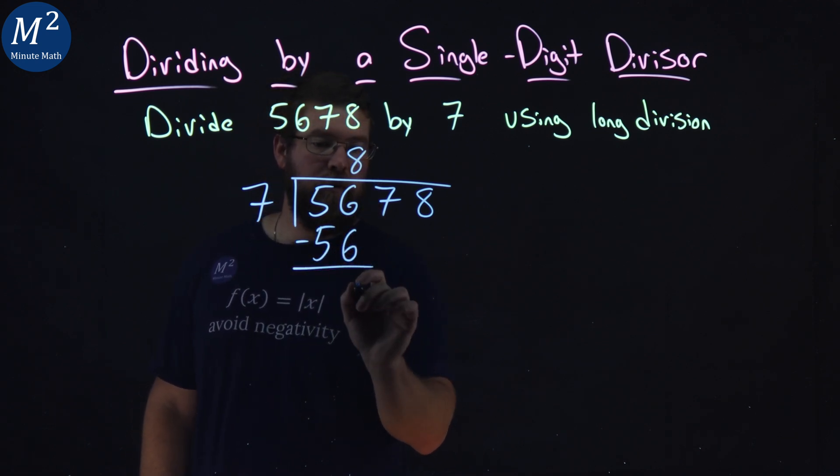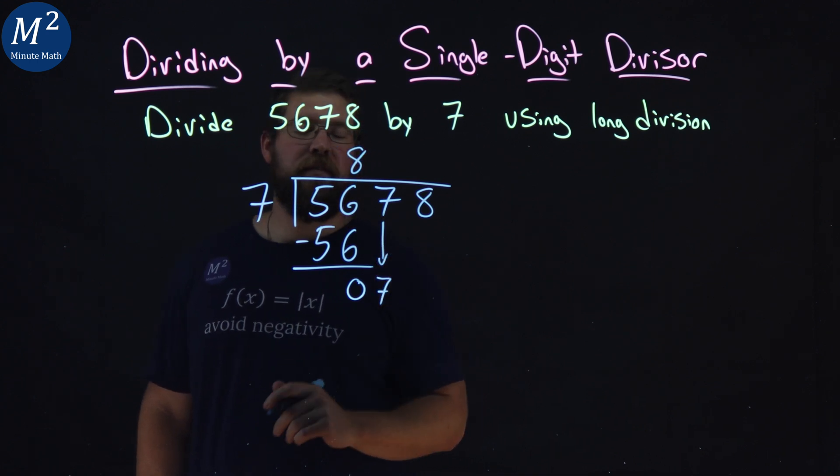We subtract the two numbers. We get a 0. Bring down the 7.